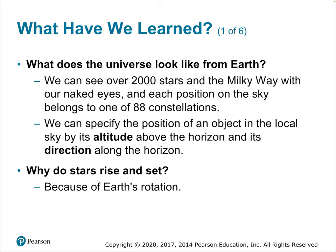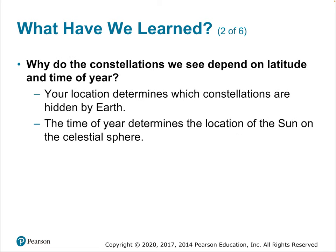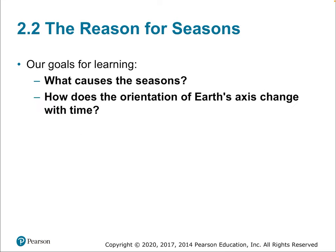To summarize Section 2.1: we can see over 2,000 stars and the Milky Way with our naked eyes, and each position in the sky belongs to one of 88 constellations. We can specify the position of an object in the local sky by its altitude above the horizon and its direction along the horizon. Stars rise and set because of Earth's rotation — apparent motion. The constellations we see depend on latitude, which determines which constellations are hidden by Earth, and on the time of year, which determines which stars are obscured by the Sun. We'll continue with Section 2.2 on the tilt of the planet and the reason for the seasons.